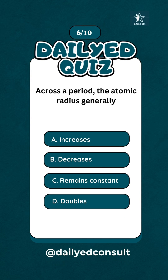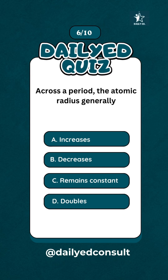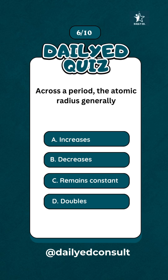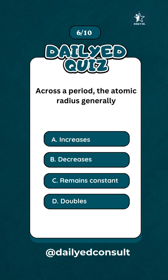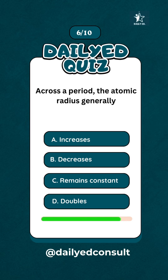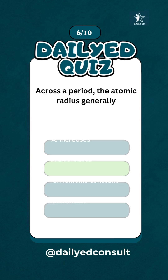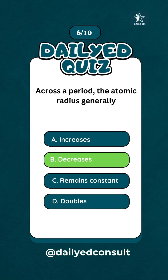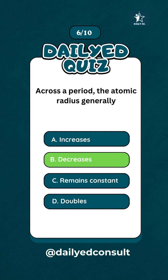Across a period, the atomic radius generally... Decreases.